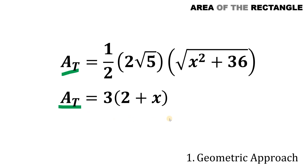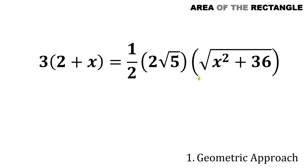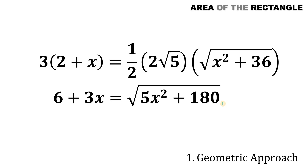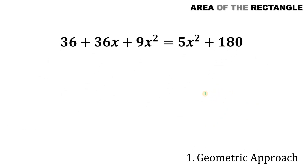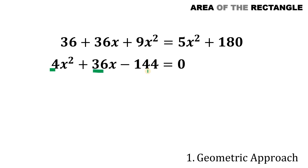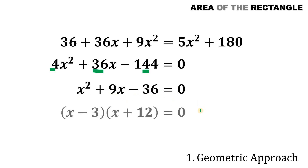Using these two expressions, we can now find the value of x. Setting them equal: simplifying gives 6 + 3x = √(5x² + 180). Squaring both sides: 36 + 36x + 9x² = 5x² + 180. Combining like terms and setting equal to zero gives 4x² + 36x − 144. Dividing all terms by 4 gives x² + 9x − 36, which factors nicely as (x − 3)(x + 12). Setting each factor to zero gives x = 3 or x = −12.